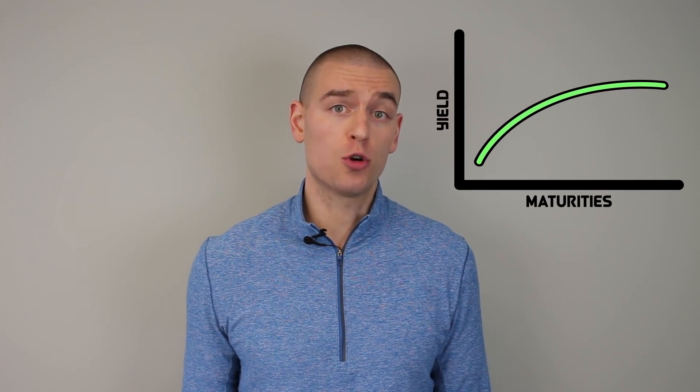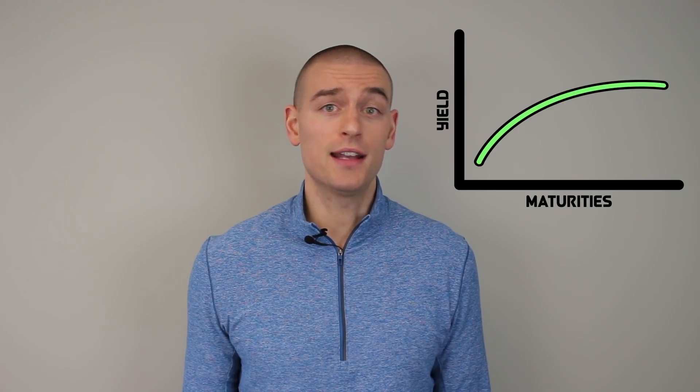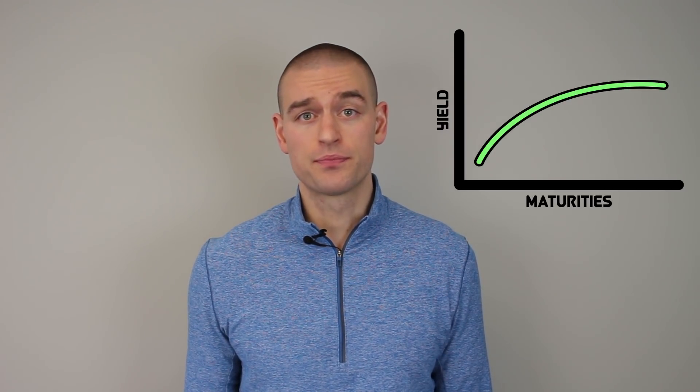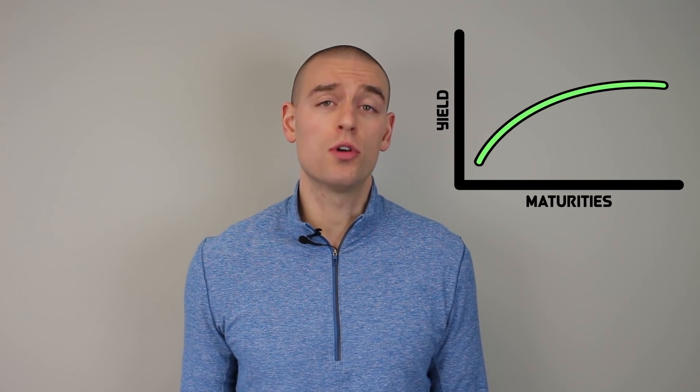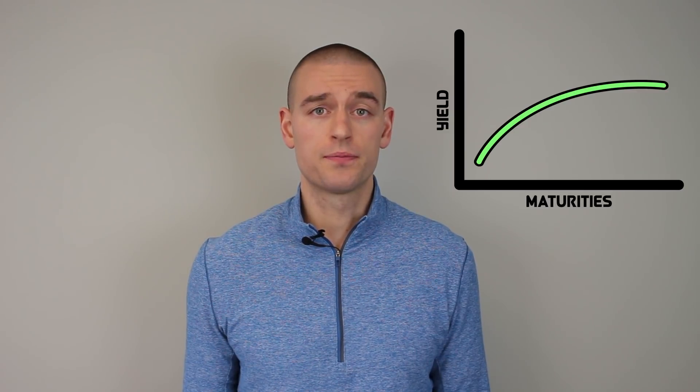Bringing this back to the yield curve, we would expect the plot to show that shorter maturities have lower yields and longer maturities have higher yields. This is what we would call a normal yield curve.